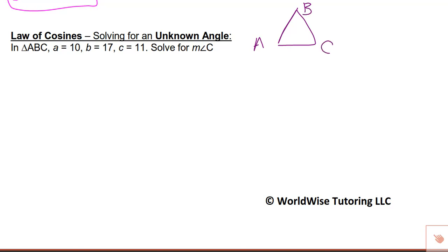They tell me side a, which is across from angle A, is 10. Side b is 17. And side c is 11. Here, we do not have an angle-side pair, so I'm using law of cosines. And I'm being asked to solve for angle C. So I'm going to use the one that starts with c, because it's the only one that has angle C in it.